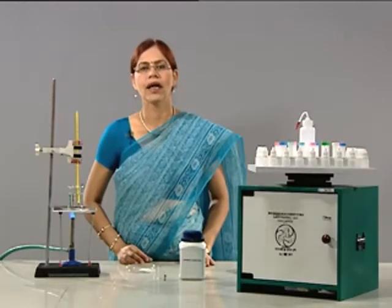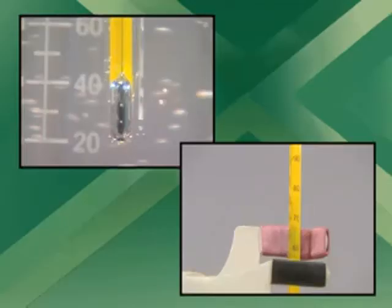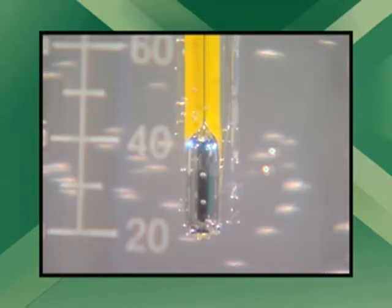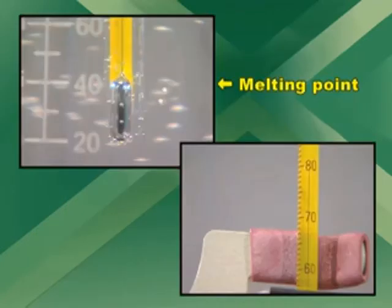Keep a close eye on the thermometer as well as on the capillary tube, and note down the temperature when the substance starts melting. We have just noticed that the melting point of the given organic substance is 80 degrees Celsius.